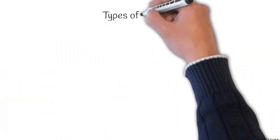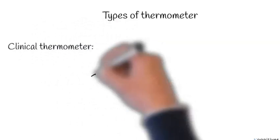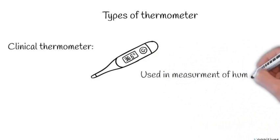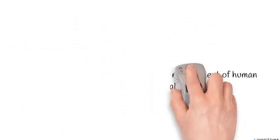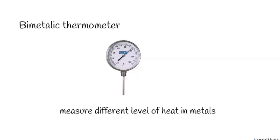Under this thermometer, we'll have two different types we're going to talk about. For temperature, we're going to talk about the clinical thermometer, used in hospitals to take measurement of body temperature. We also have the bimetallic thermometer, which measures different levels of heat in metals. In the next session, we're going to talk extensively about the various levels of heat in metals — a metal can be hot and a metal can be cold.